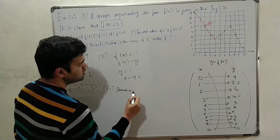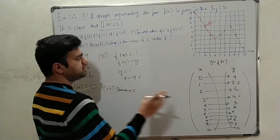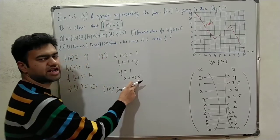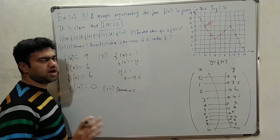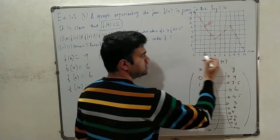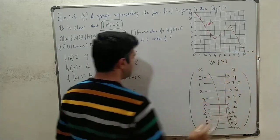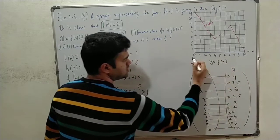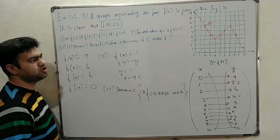Third sub-question: domain and range. We need to find the domain and range from the graph. The domain is the set of all x values. From the graph, x lies between 0 and 10. So the domain is x from 0 to 10, where x belongs to the real number system. That is the domain.